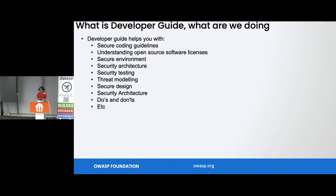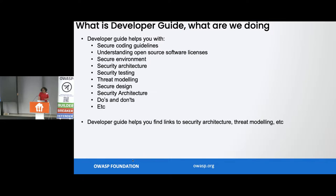The developer guide helps you not just with secure coding guidelines, but with the entire overarching view — understanding open source software licensing. I've seen people apply a license but only during the release phase realize there is a commercial implication, and it hasn't been an MIT license or Apache 2.0 license. You've got to go and pay back to the originator of that open source software. Your environment, architecture, testing, threat modeling — the developer guide tells you about all of that and helps you find links to secure architecture, threat modeling, etc.